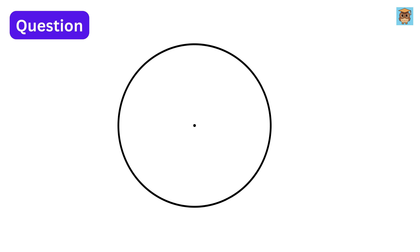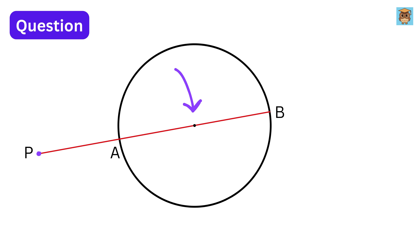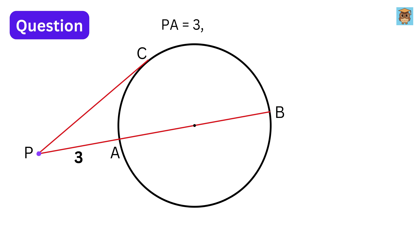Suppose we have a circle and an external point P outside the circle. From P we draw a secant line that intersects the circle at two points A and B, such that this secant line passes through the center of the circle. Then we draw a tangent which touches the circle at C. If PA is 3 units and PC is 4 units, then what will be the radius of this circle?